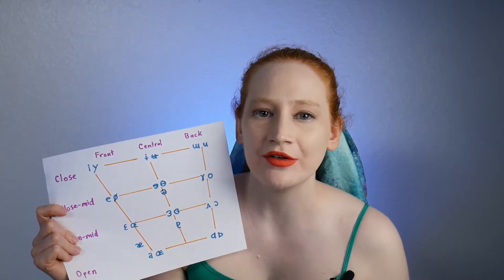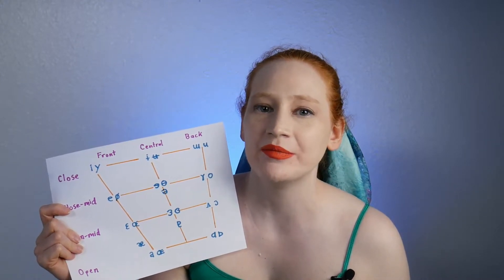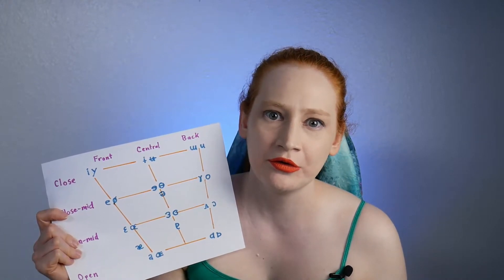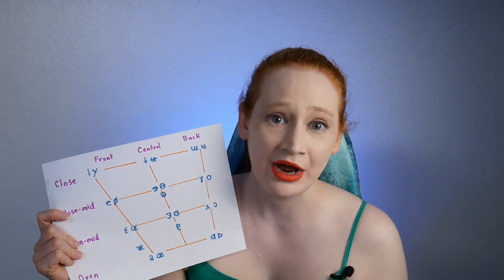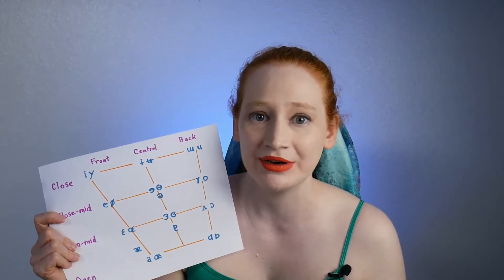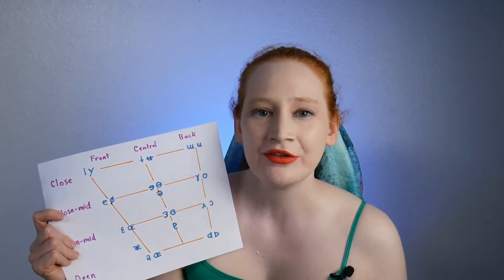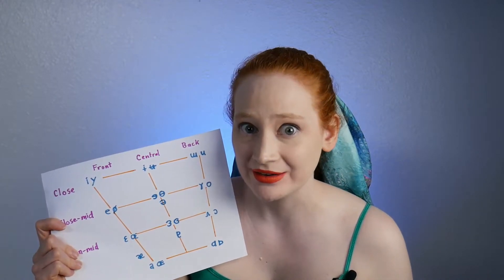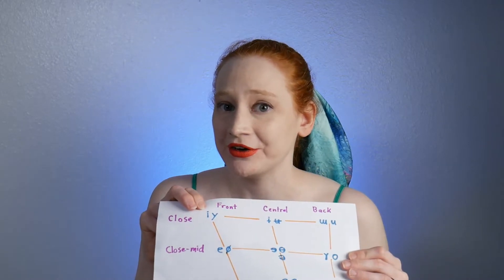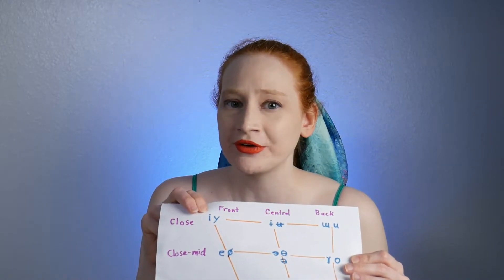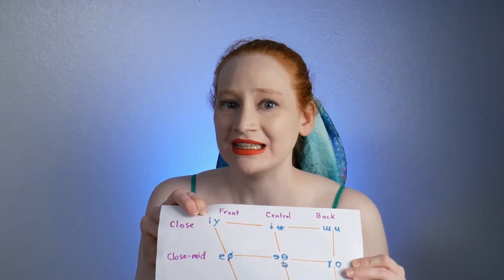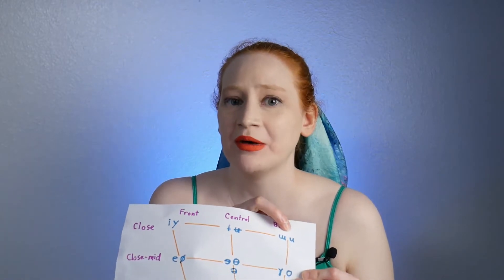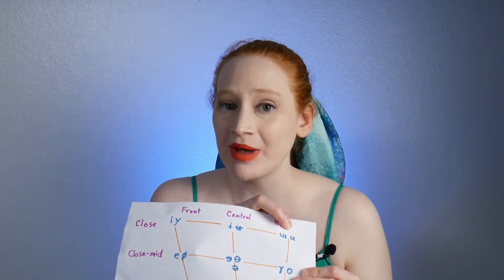You notice that when you produce vowels, you kind of bunch up your tongue in one particular part of your mouth. Like with ooh, you're kind of bunching it up in the back, and with E, you're kind of bunching it up pretty far forward. That is called frontness or backness. E is a front vowel — your tongue is bunched up pretty far forward in your mouth. And ooh is a back vowel — your tongue is bunched up pretty far back in your mouth.